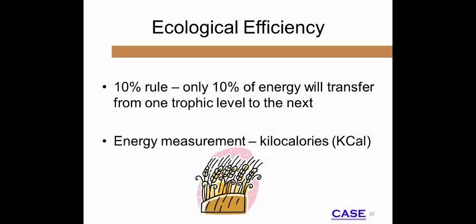A great deal of energy is lost as it transfers up trophic levels. Feeding higher-order consumers takes a great deal of energy from producers. Using the 10% loss as an example, an eagle that weighs 10 pounds would need to consume 100 kilocalories from the mouse population. Those mice consumed by the eagle, in turn, would have had to consume 1,000 kilocalories from grass.